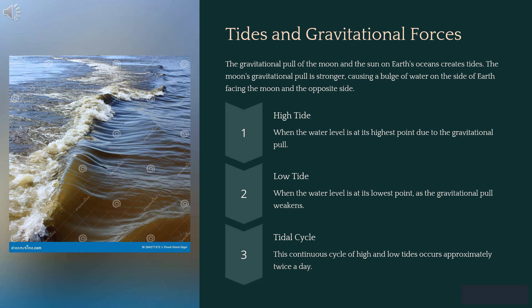Lastly, Earth's movements also affect the tides. The gravitational pull of the moon and the sun creates high and low tides. The moon's pull is stronger, causing water to bulge toward it. This tidal cycle repeats approximately twice a day, showing how Earth's movement influences the ocean.